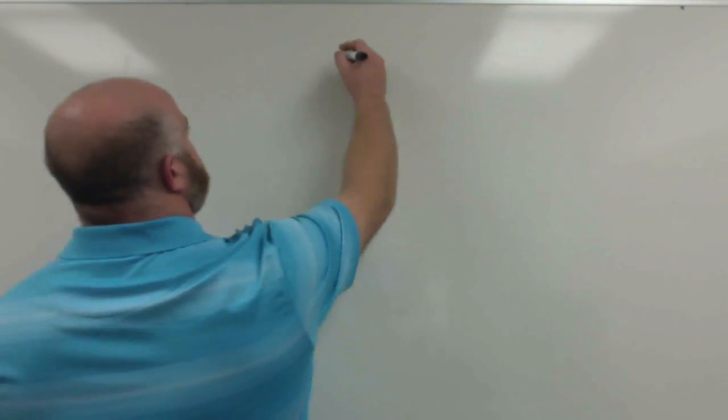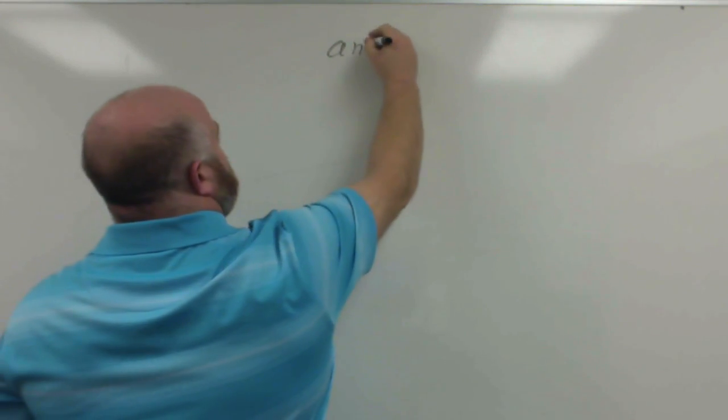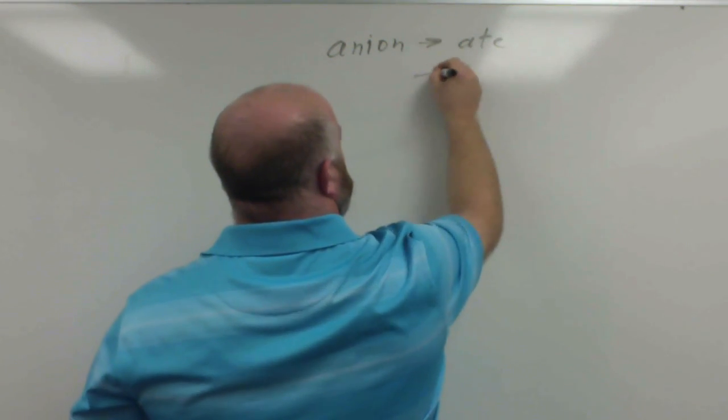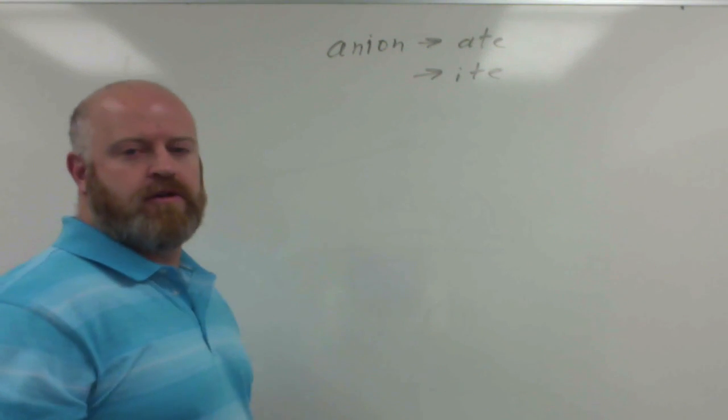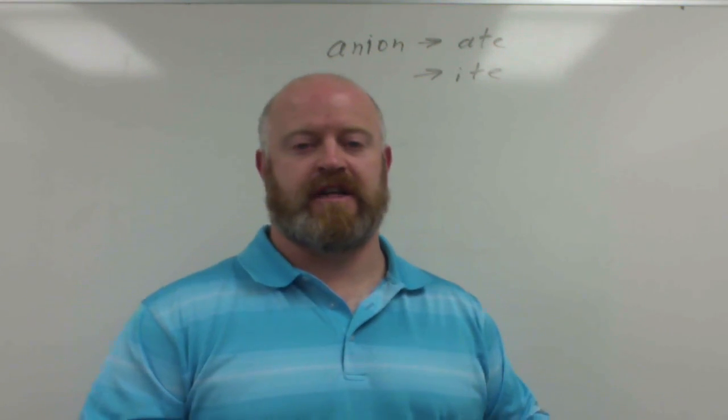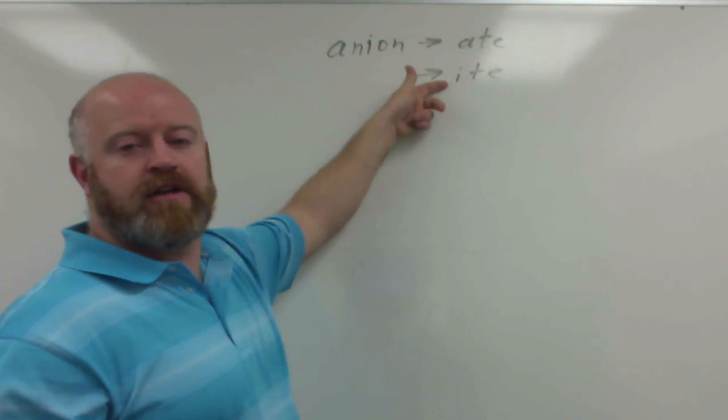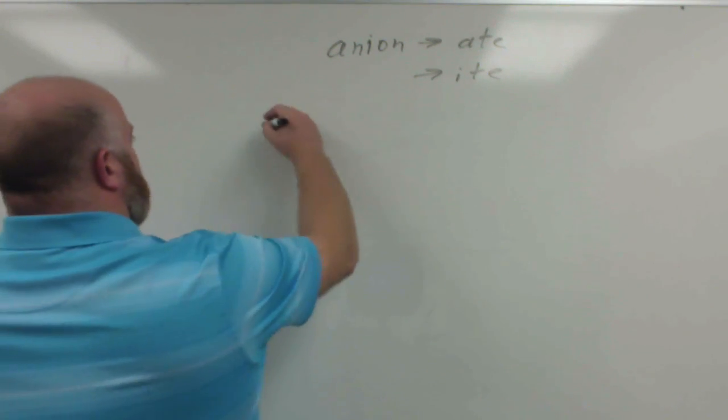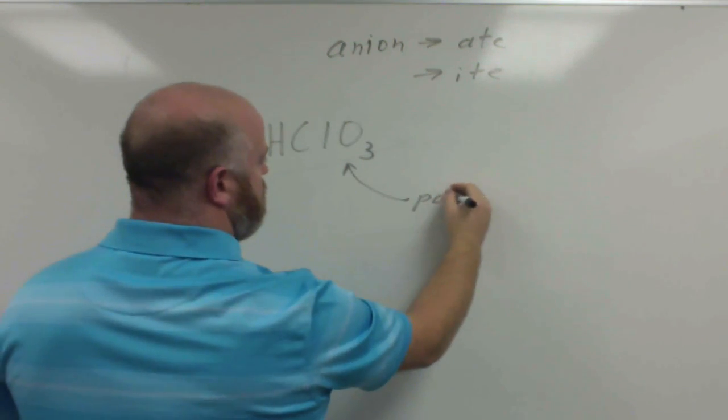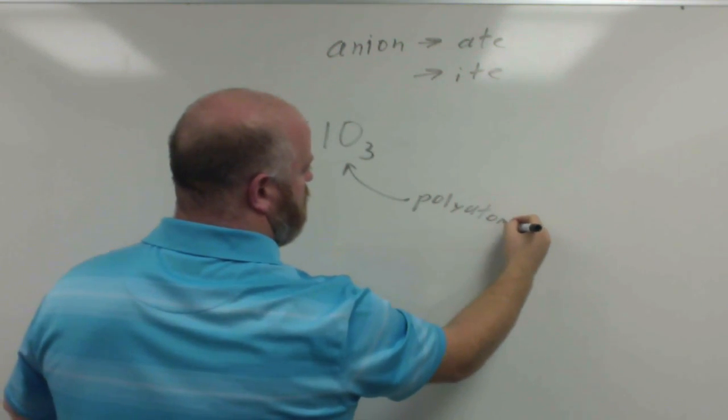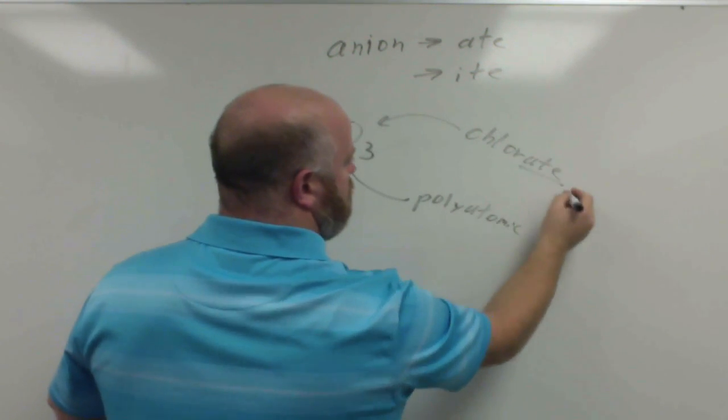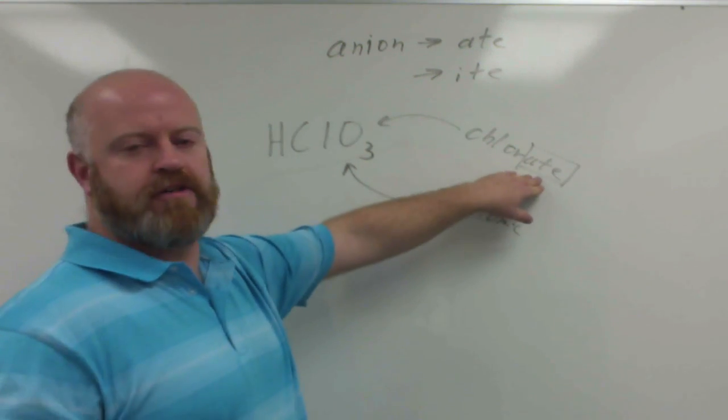If you have a polyatomic, so if your anion ends normally in -ate or -ite, we don't use a prefix hydro with it. Instead we drop that prefix off and we use two different endings to designate between -ate and -ite. So if we had HClO3, this is a polyatomic. This is chlorate. And the -ate is our key here.